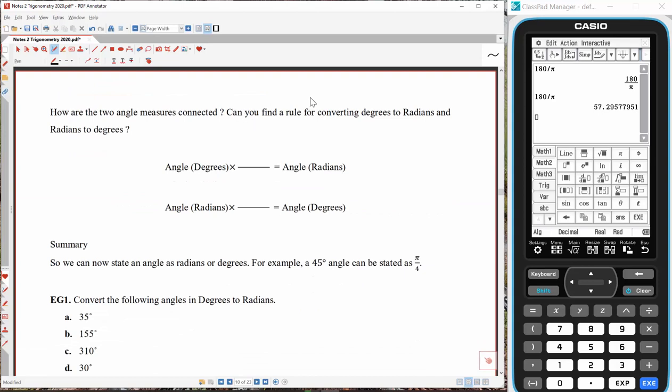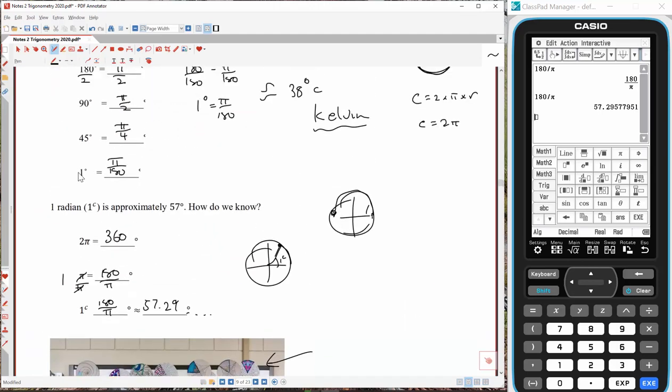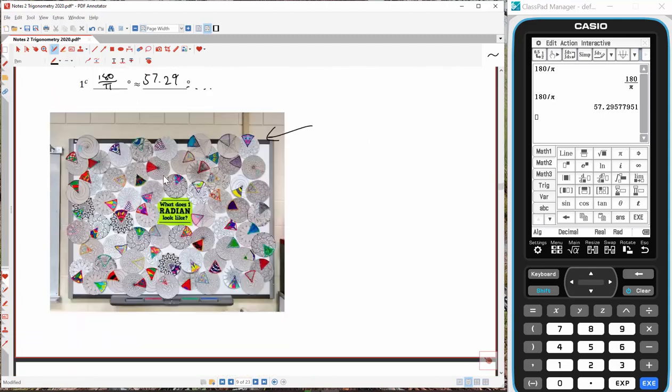So, how are the two angles connected? Can you find a rule? So if I'm going from angle in degrees, and I want to convert from radians, so 1 degree, what I do is I multiply by, so for every 1 degree, I multiply by π on 180. Where did I get that from? Just up here. 1 degree, multiply by π on 180, will convert to radians.